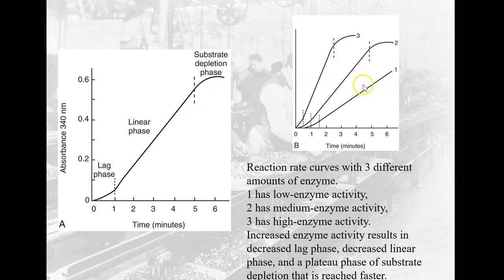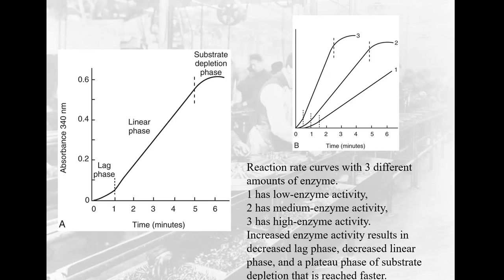This graph shows the reaction rate curves with different amounts of enzymes. The first one has a low amount of enzyme, so it's slow getting going — less absorbance per time increment. With medium enzyme activity, it gets going a little faster and speeds up in the linear phase, reaching higher absorbance in less time. The highest enzyme concentration has a really short lag phase, climbs steeply, and reaches substrate depletion much faster. These three graphs represent different speeds of enzymatic activity, measured in the linear phase.